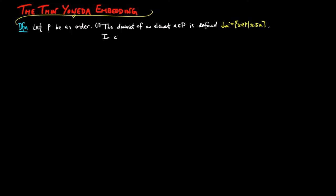In categorical terminology, the lower segment on a is a functor from p^op to the order 2, where 0 is less than or equal to 1. That is, the lower segment on a is the contravariant representable pre-sheaf on a.